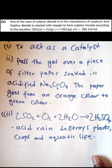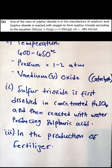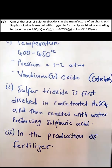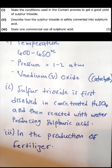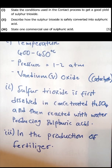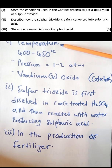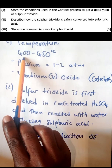Question 11b: one of the uses of sulfur dioxide is in the manufacture of sulfuric acid. Sulfur dioxide is reacted with oxygen to form sulfur trioxide in the contact process. To get a good yield of sulfur trioxide, condition number one is a temperature ranging from 400 to 450 degrees Celsius.